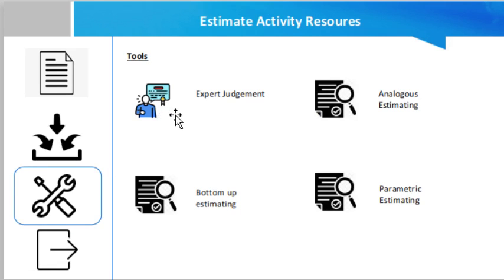The tools used for this process include expert judgment — expertise should be considered from individuals or groups with specialized knowledge or training in team and physical resource planning and estimating. Then bottom-up estimation — team and physical resources are estimated at the activity level and then aggregated to develop the estimate for work packages, control accounts, and summary project level.